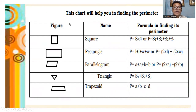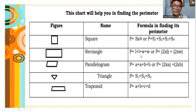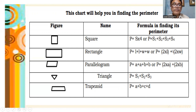This chart shows the formula for finding the perimeter of each figure. For a square: perimeter equals side times 4, or P equals side 1 plus side 2 plus side 3 plus side 4. For a rectangle: P equals length plus length plus width plus width, or P equals 2 times length plus 2 times width. For a parallelogram: P equals a plus a plus b plus b — add all the sides. Then we have the triangle and the trapezoid.